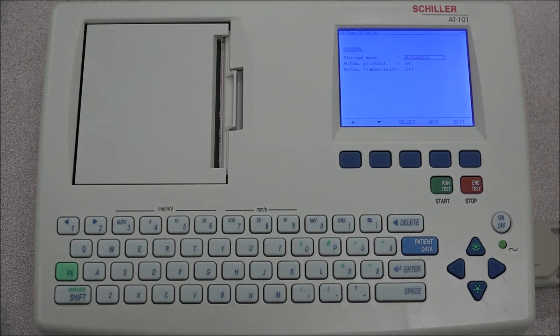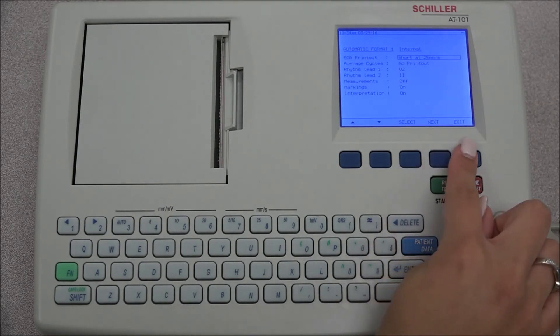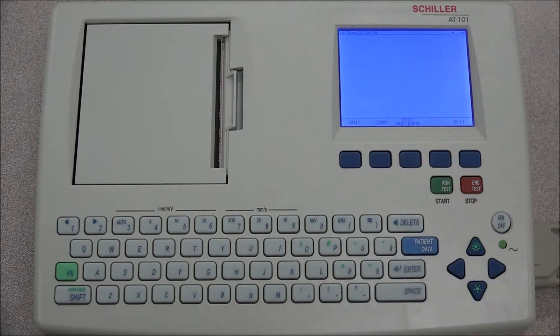Under system settings, you have several options. Under unit, you have various parameters. The user ID is where the identification of the user is inserted. This identification is printed on all automatic recordings. The time, date, and language are defined under the unit tab.